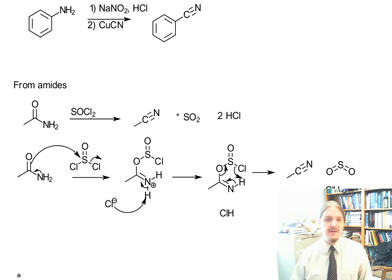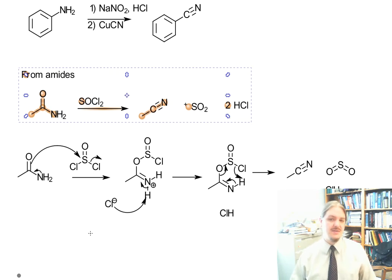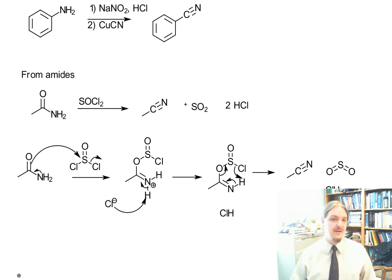And then the other way to make nitriles is by dehydration of primary amides. And this reaction uses thionyl chloride, though other dehydration agents like P2O5, phosphorus pentoxide, works.